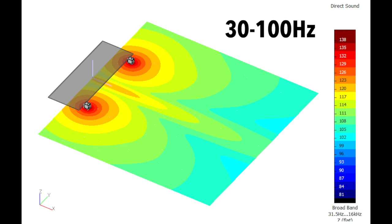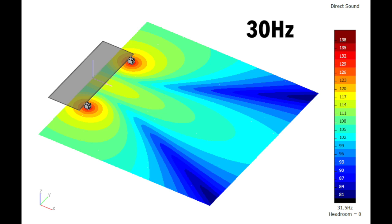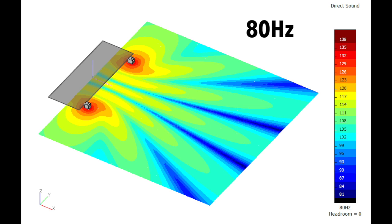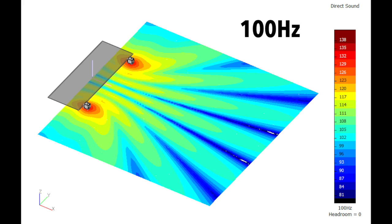When you do subs in stereo, it might look okay in the software on a broadband calculation. There's like a little bit of power alley, but overall it looks pretty smooth. But when you break it down per frequency, you can see that there's massive nulls and cancellation spots. Comb filtering in general means that most people in the venue are going to have a somewhat degraded subwoofer experience.